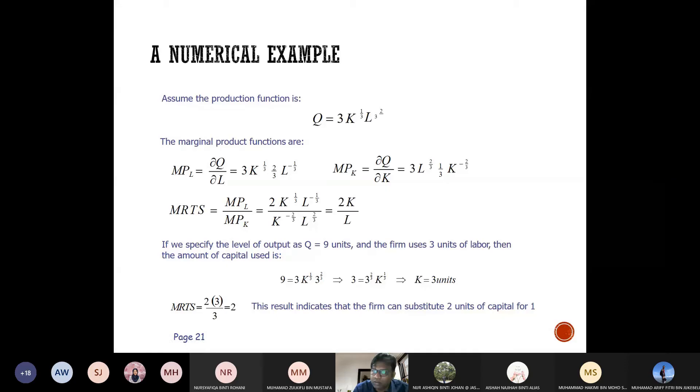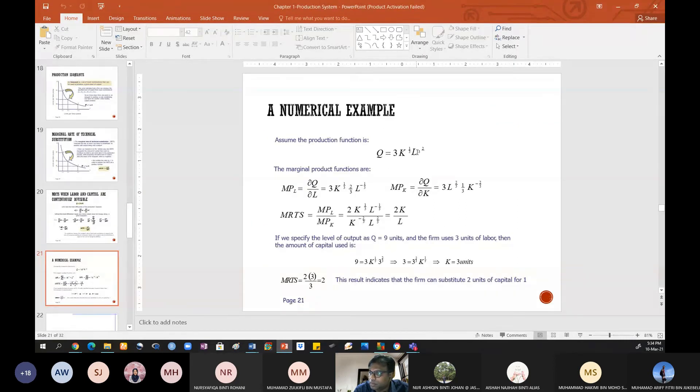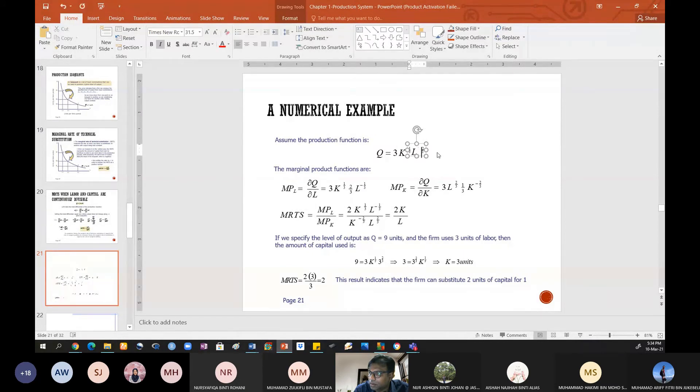This is an example. The production function Q = 3K^(1/3)L, where K stands for capital and L stands for labor. Actually, the exponent for labor should be two-thirds. Can you do it now? Done.